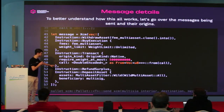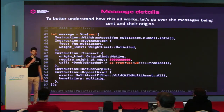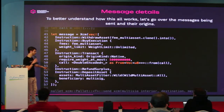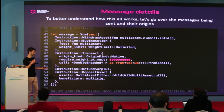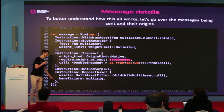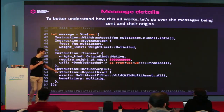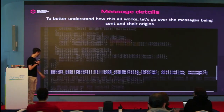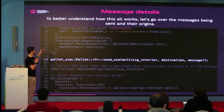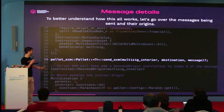We can add instructions at the end to make sure we're not paying more fee assets than the call actually costs. We use the refund surplus instruction, which will refund the unused assets to the holding register. Then deposit asset will take those assets and redeposit them in an account that you pass — in this case the location of the multi-sig. We can then build a pallet that does all this and calls pallet XCM directly by passing that multi-sig interior destination and the message.